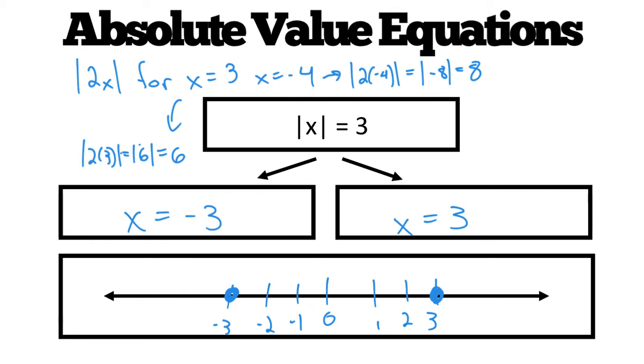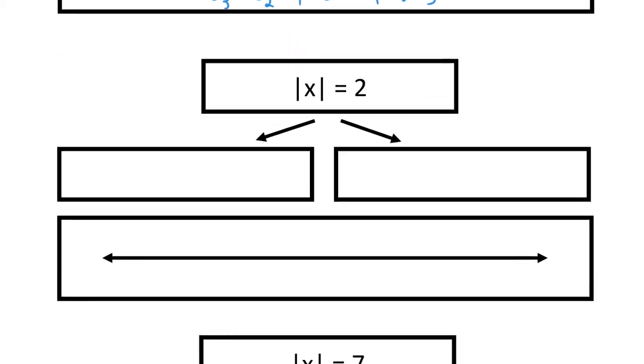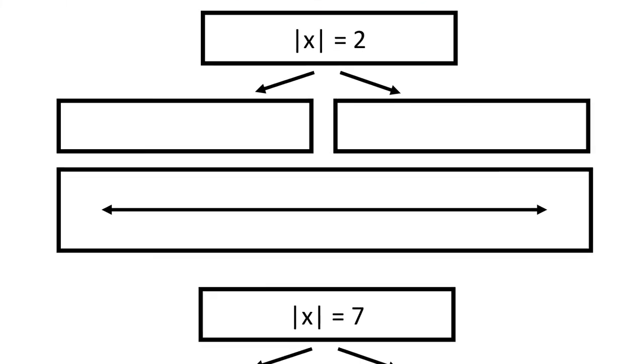So to move ahead, maybe take a minute and pause the video and see if you can solve. I'll go through this one, actually. I'll have you do absolute value of x equals 7 on your own. So for this equation, numbers that are 2 away from 0, negative 2, positive 2. So to graph this, solid circle at negative 2, solid circle at positive 2.